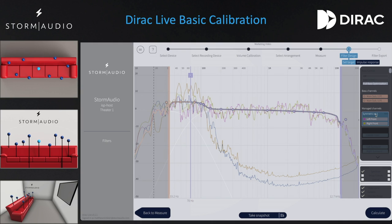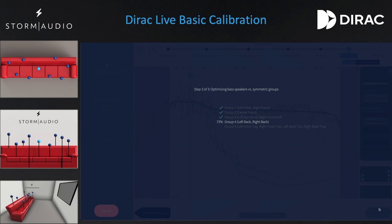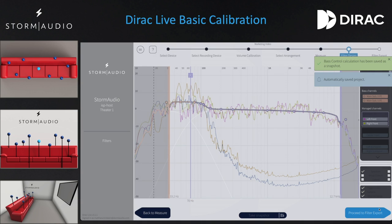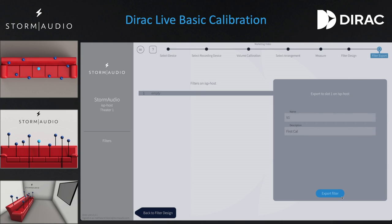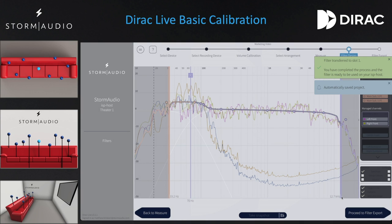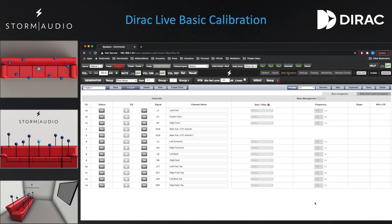When you are happy with the target response of each group, click on Calculate. The Dirac Live tool will now calculate all of the filters needed to correct your system. Once complete, select Proceed to Filter Export. Dirac Live will always show one slot, as it will create one new profile from the data you have acquired. Each theater or zone in the ISP can have multiple profiles. Give the calibration a name and description that is meaningful and click Export. When the Dirac Live tool is done exporting the profile, it will return to the Filter Design page. Now return to your web browser showing the processor's web user interface. The web UI will ask you to give a seeding label to the profile and confirm the name and description. Click Save.